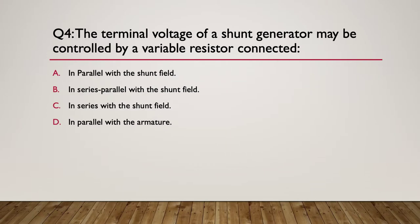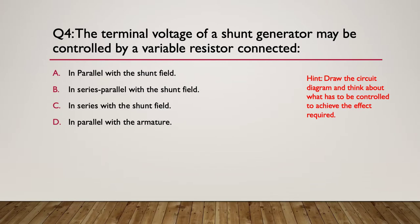Question four: the terminal voltage of a shunt generator may be controlled by a variable resistor connected how? A: in parallel with the shunt field. B: in series-parallel with the shunt field. C: in series with the shunt field. Or D: in parallel with the armature. So how do we control the terminal voltage of a shunt generator — A, B, C, or D? Draw the circuit diagram and think about what has to be controlled to achieve that effect.